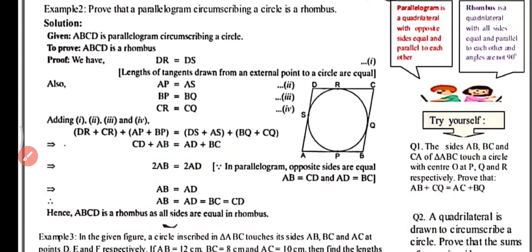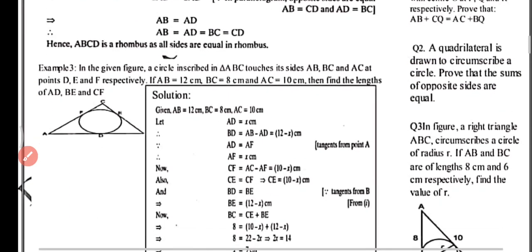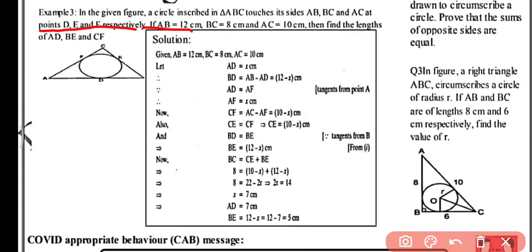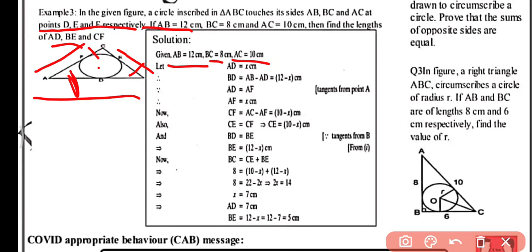Now example number three: a circle is inscribed in triangle ABC touching its sides AB, BC, and AC at points D, E, and F respectively. We are given AB equals 12 cm, BC equals 8 cm, and AC equals 10 cm. We need to find the lengths of AD, BE, and CF. In triangle ABC, let AD equal x centimeters, so BD equals AB minus AD, that is 12 minus x centimeters.